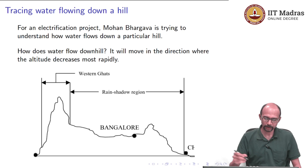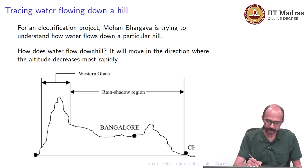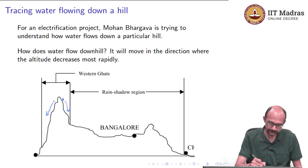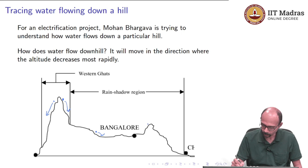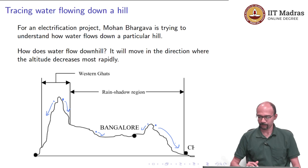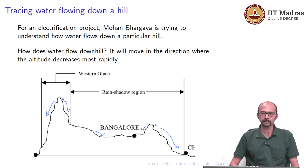If you have water somewhere over here, it is going to flow down here. If you have water on this side, it will flow down on this side. And if you have water here, it flows toward Chennai. It is clear what we mean by water moving in the direction where altitude decreases most rapidly.